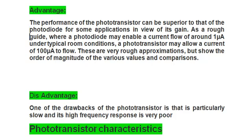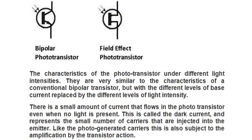Now let us discuss phototransistor characteristics. These are the characteristics of the phototransistor under different light intensities. They are very similar to the characteristics of a standard transistor, but with the different levels of base current replaced by different levels of light intensity. There is a small amount of current that flows in the phototransistor even when low light is present — this is called the dark current. It represents the small number of carriers that are thermally generated, and is also subject to amplification by the transistor action.